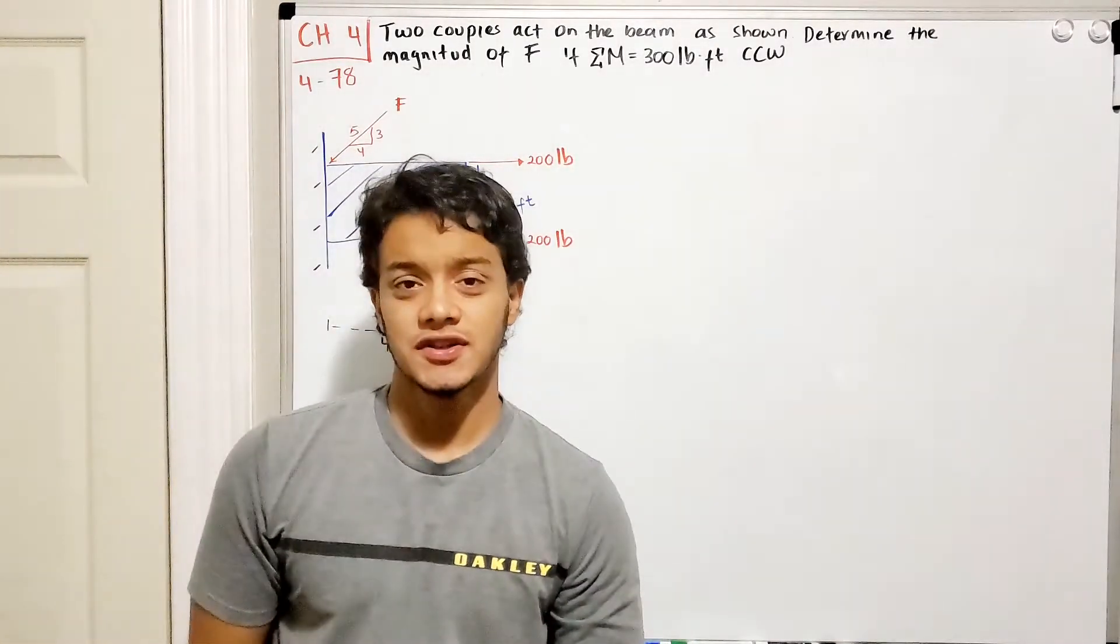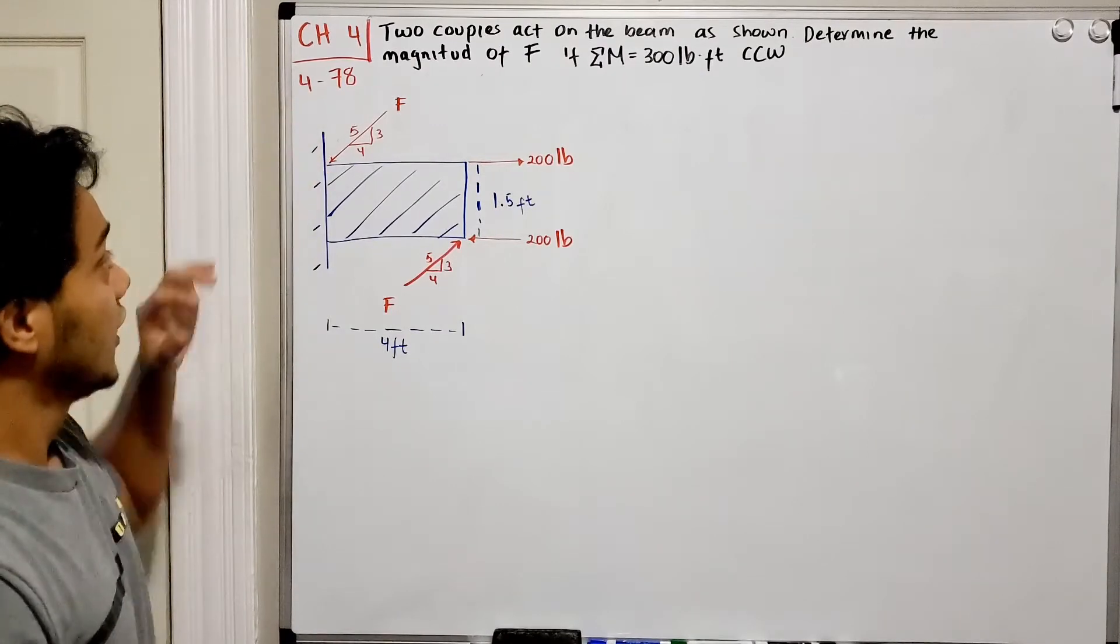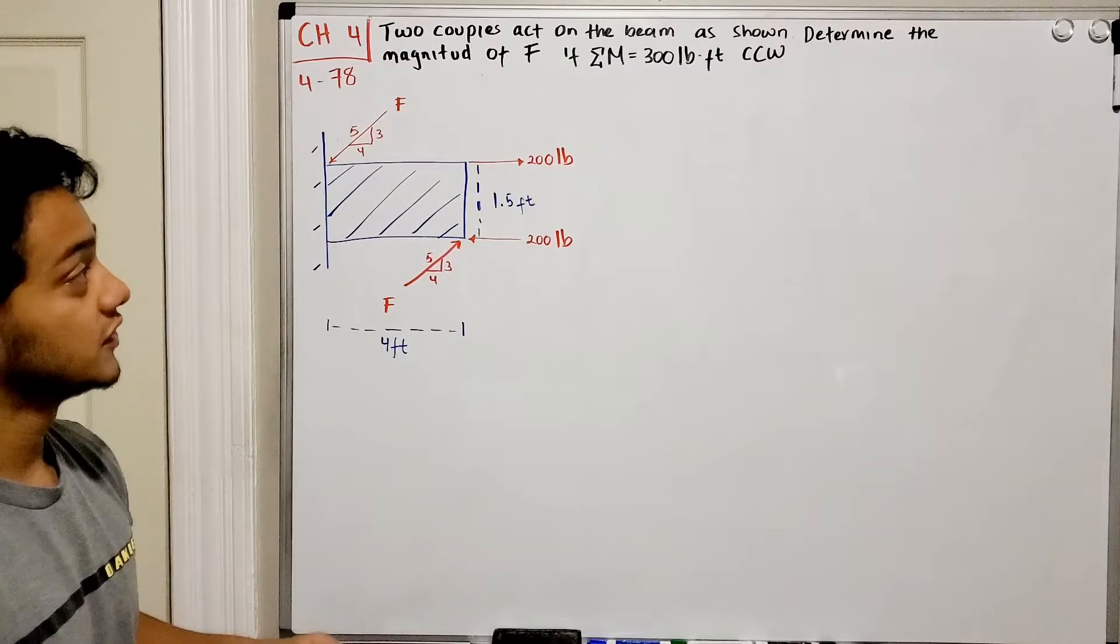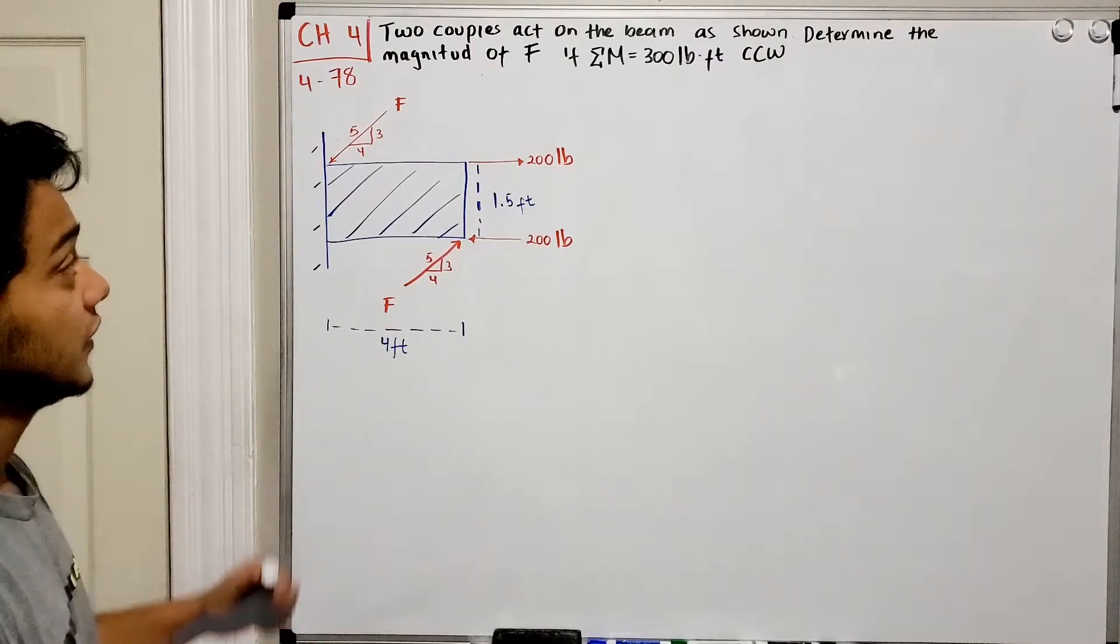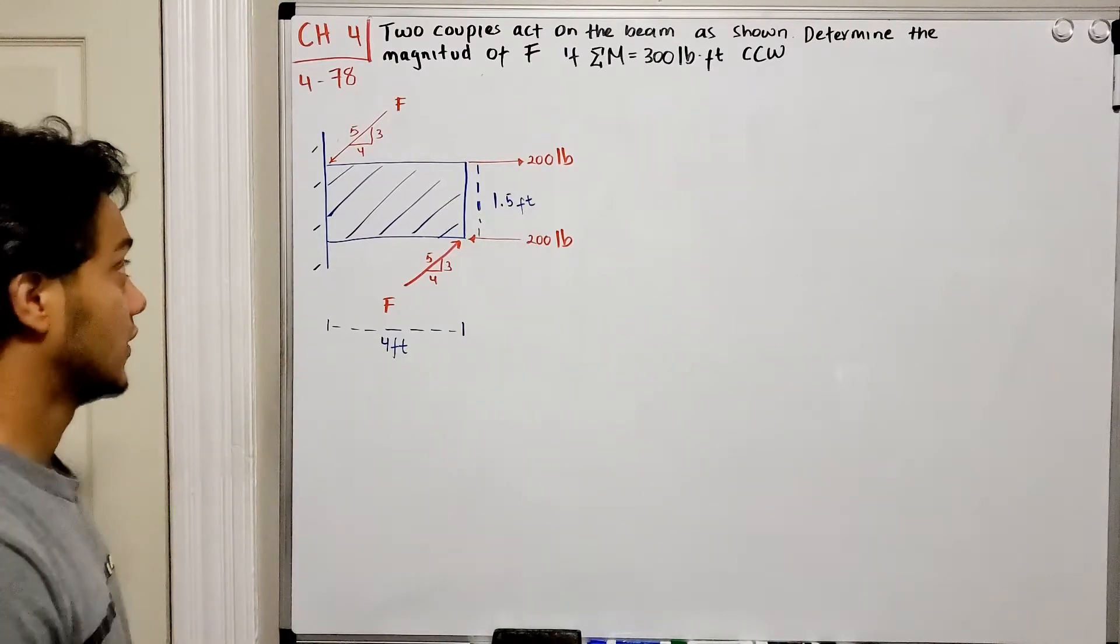Welcome back everyone to learning by teaching. We're in statics and we're going to do problem 4.78. It says two couples act on the beam as shown. Determine the magnitude of F if the sum of the moment in the beam is equal to 300 pounds-feet counterclockwise.